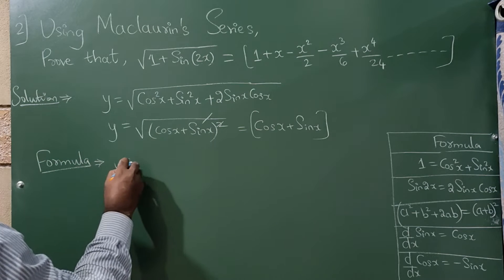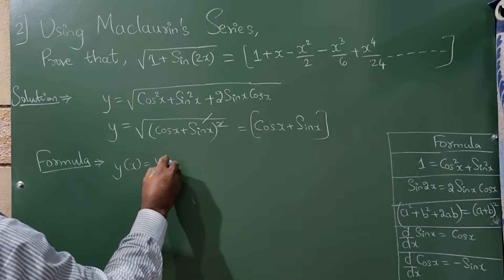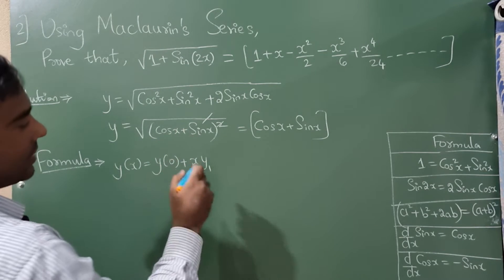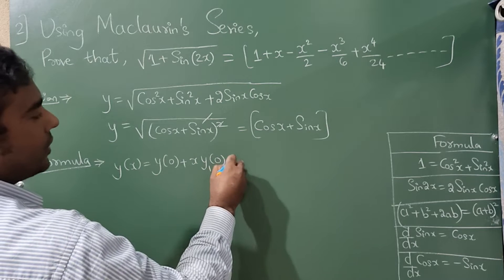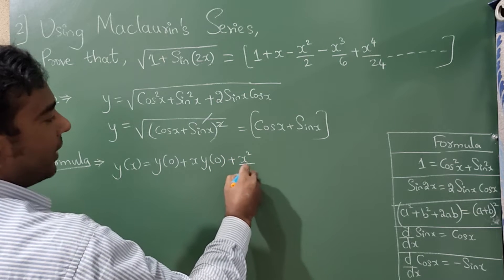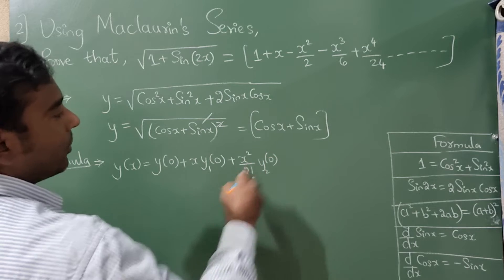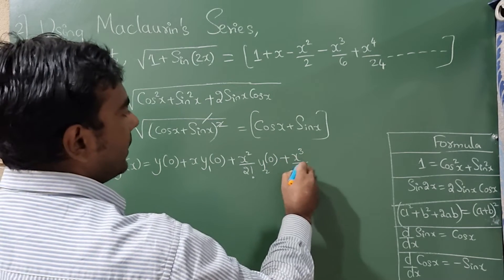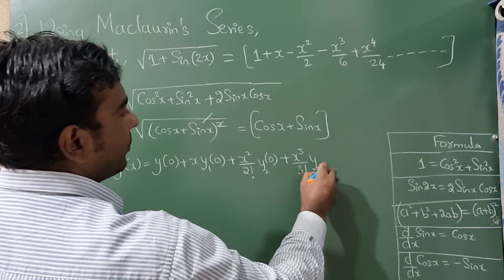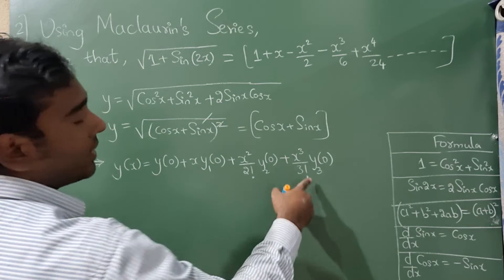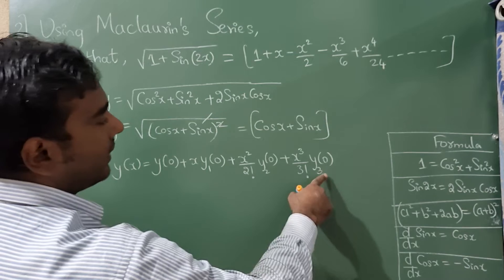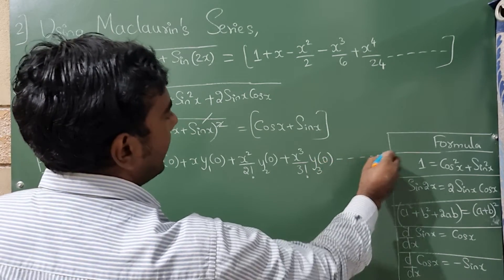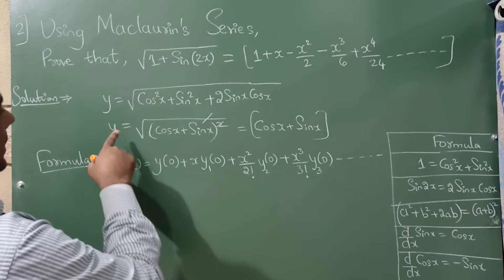The Maclaurin series formula is: y(x) = y(0) + x·y₁(0) + x²/2! · y₂(0) + x³/3! · y₃(0) + x⁴/4! · y₄(0) + ... where y₁, y₂, y₃, y₄ denote successive derivatives evaluated at 0.